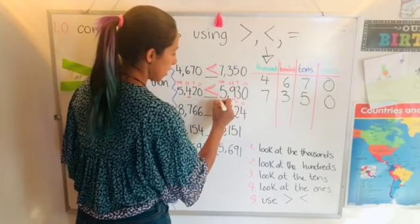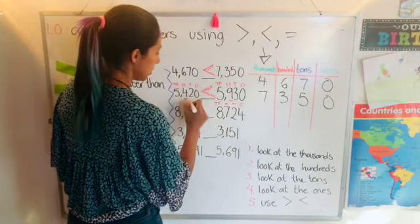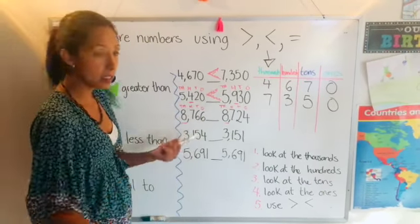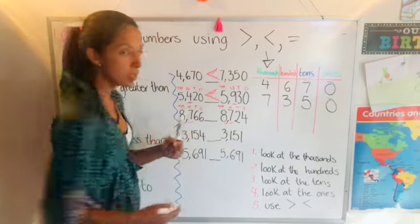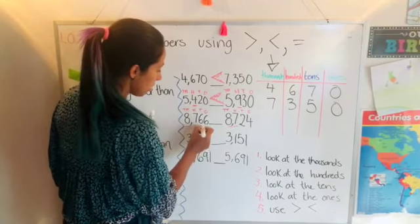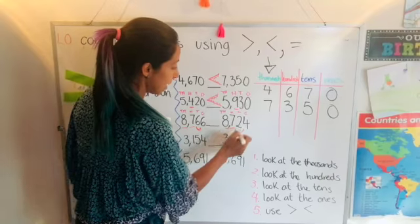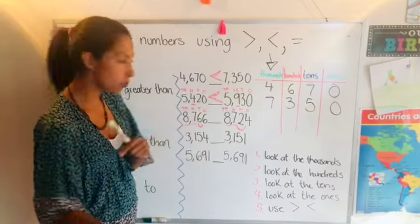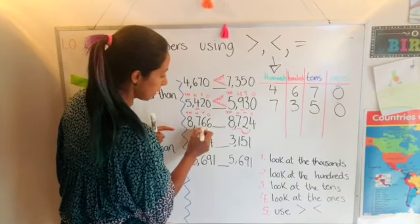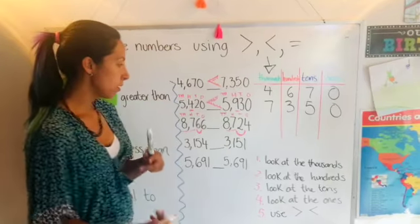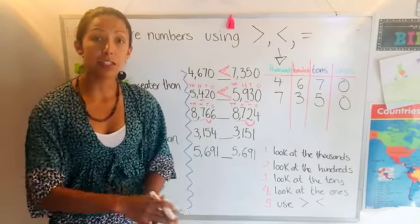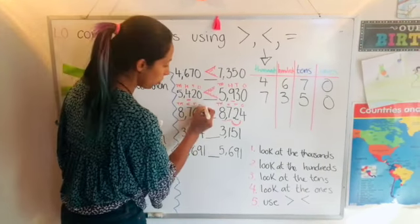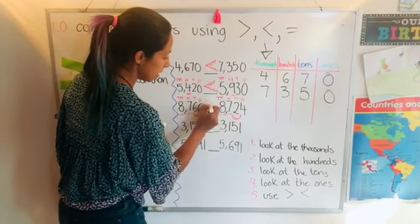Ones, tens, hundreds, and thousands. Look at the first one, it's the same. Second one the same. Go to the third number that is tens. Be very careful, always tens with tens, hundreds with hundreds, okay? So now we have six and two. What number is greater than the other one? Six. So the alligator will eat the greater number.